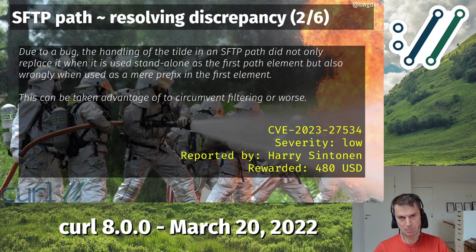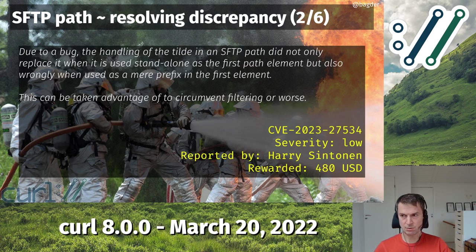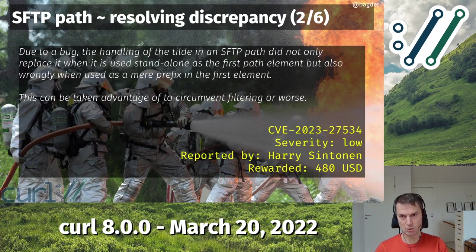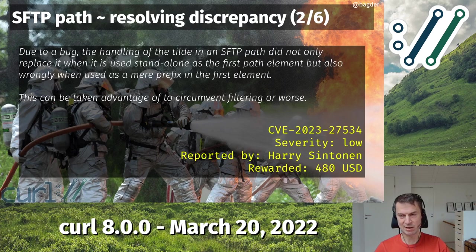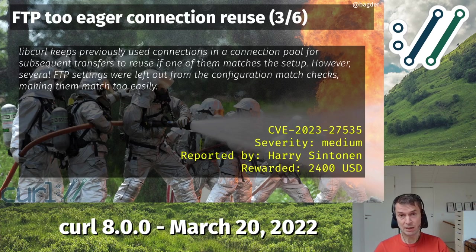Harry also reported an URL path issue: when doing SFTP transfers with curl, you can use the tilde-slash thing in the URL path. If used as a first component, tilde-slash is supposed to become the user's home directory, but due to bad code you could also get it to add the user's home directory wrongly — so you could possibly use this to circumvent filters. Another severity low; read up about it if you're using SFTP.